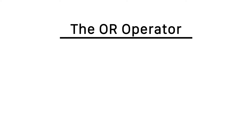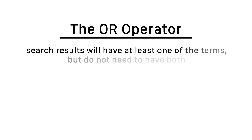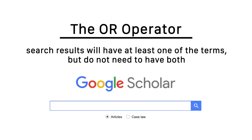If you don't need both terms to be in the same article, but still want to search for both at the same time, you can use the OR operator. When you put OR between words, the database will return any results that contain at least one of the terms.